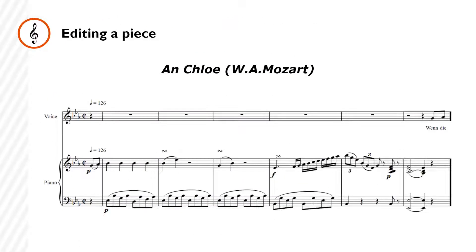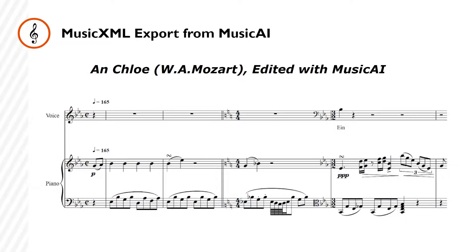To illustrate Music AI's notational manipulation abilities, we can read a Music XML file of a Clo by Mozart and apply changes. Music AI can read every notation element and then store it as data within its structure. This representation can then be manipulated by adding and removing information.